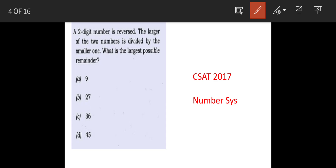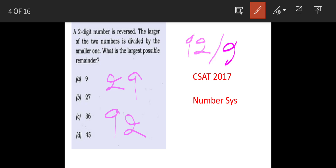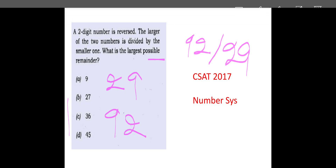So what this question is saying is that when a 2-digit number is reversed — for example, if the number is 29, when we reverse it, it becomes 92. So the larger number when divided by the smaller number, so 92 divided by 29 (this is just an example) — what will be the largest possible remainder? These are the options.